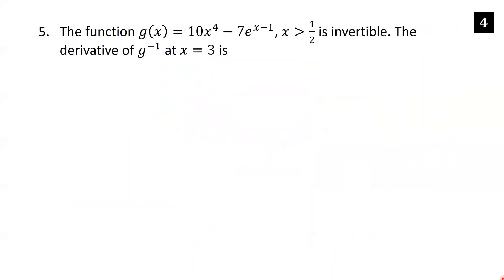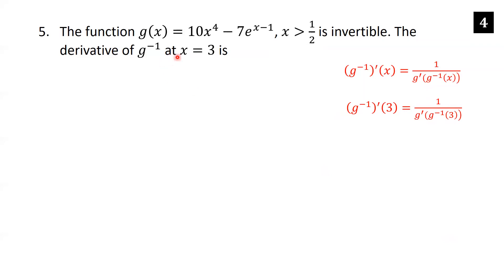The function g of x equals 10x to the fourth minus 7e to the (x minus 1) for x greater than one half is invertible. Find the derivative of g inverse at x equals 3. The formula for the derivative of an inverse is: the derivative of g inverse at x equals 1 over g prime of g inverse of x. We're plugging in 3, so the trickiest part is figuring out what g inverse of 3 is.